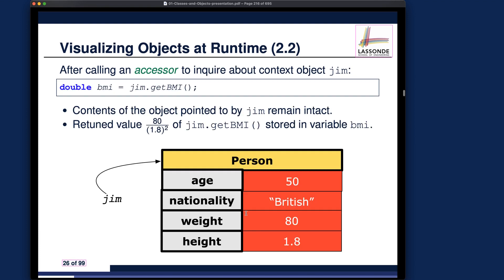Whenever you say gym.getBMI, gym is an object variable — it does not represent the object itself. Instead, it stores the address of some person object. The dot in gym.getBMI means 'follow the address stored in gym,' so you follow that, get to the particular person object, and get a BMI based on the weights and heights of that object.